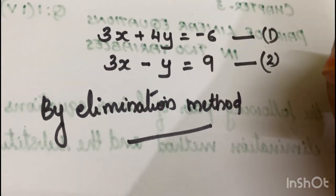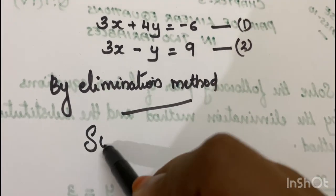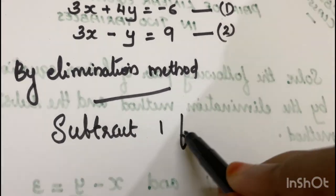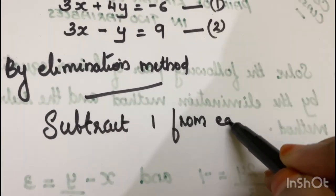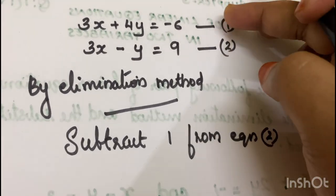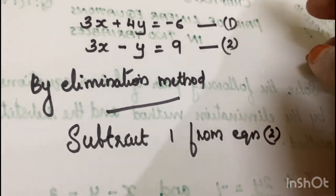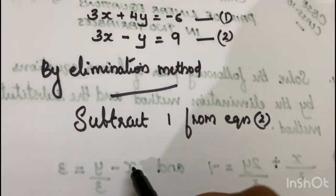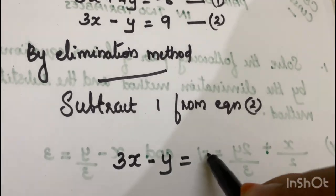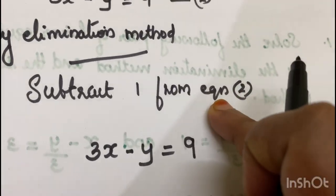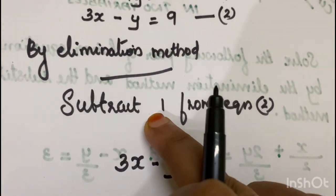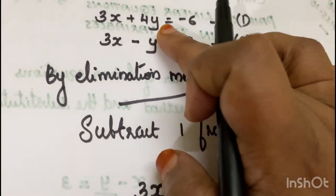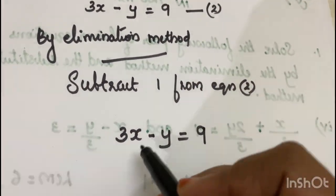Elimination method: we subtract equation 1 from equation 2. The second equation is 3x minus y is equal to 9. The x coefficient is the same, so we can eliminate x.